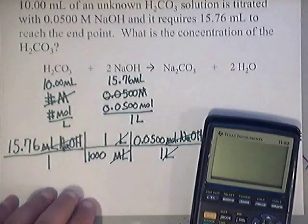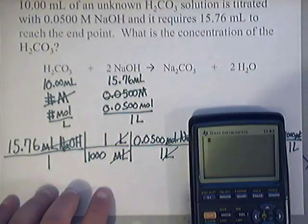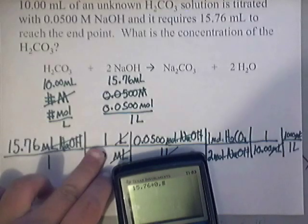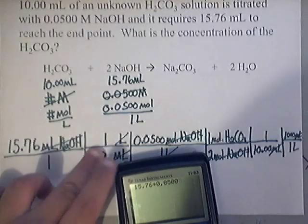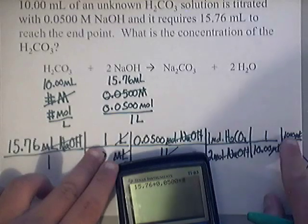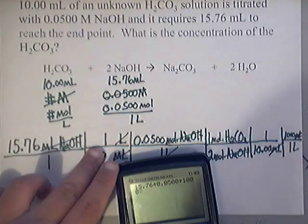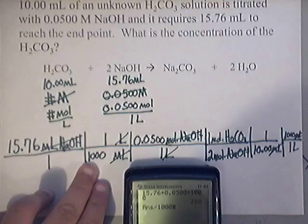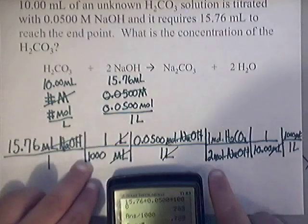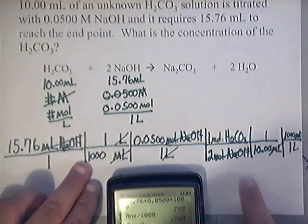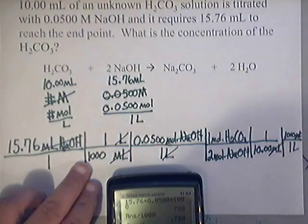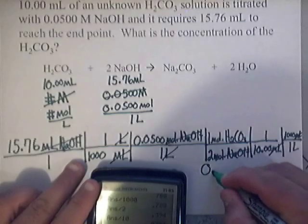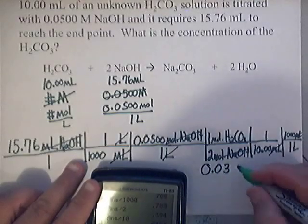So, let's put this into the handy-dandy calculator. That's what I call it. You've got 15.76 times 0.0500 times 1 times 1 times 1,000. Now, when you do that, you get 788. Now, I need to divide that number by 1,000. I need to also divide that number by 2. And I also need to divide that number by 10. Now, when I do that, I end up getting the following. I end up getting 0.0394.